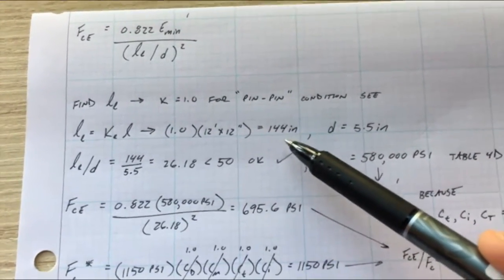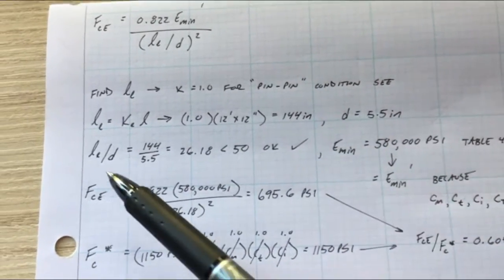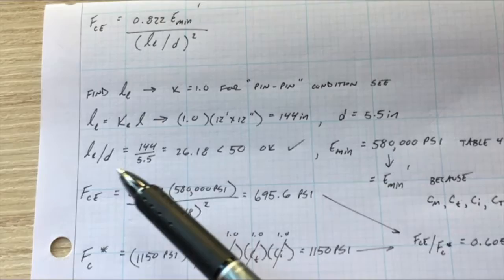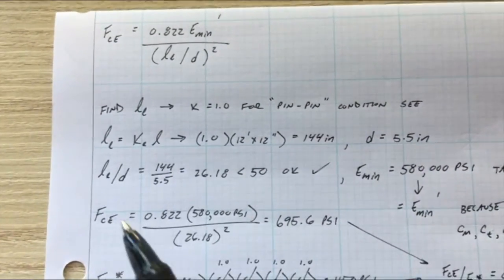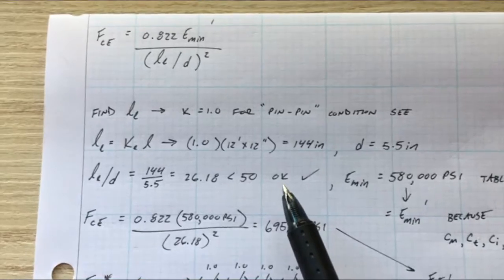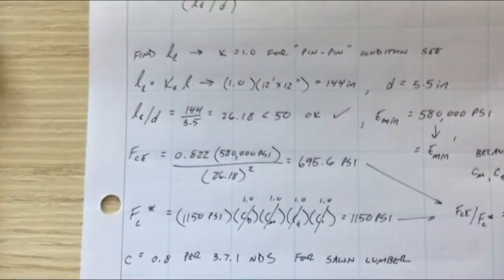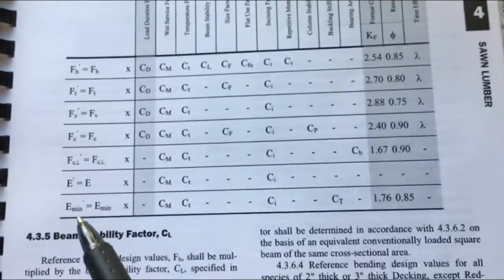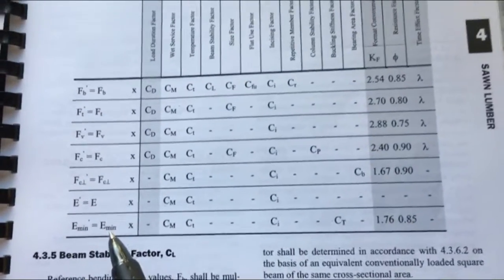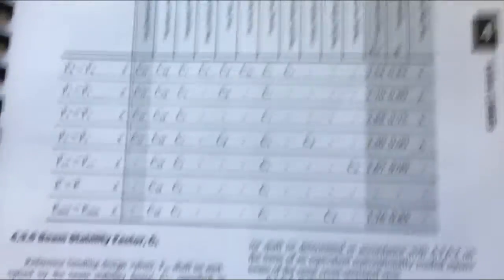Now we need L over d, L over d because we need to make sure that that's less than 50 per that section of design code that we were just at that had the big equation. So we plug that in, that's less than 50, we're good. E min, we're gonna go back to our sawn lumber chapter 4 and E min prime is what we need which equals E min times these factors.